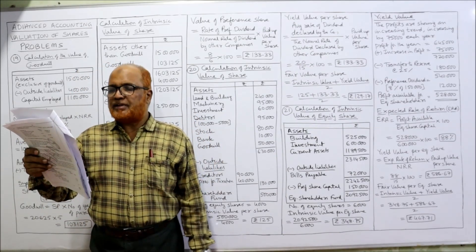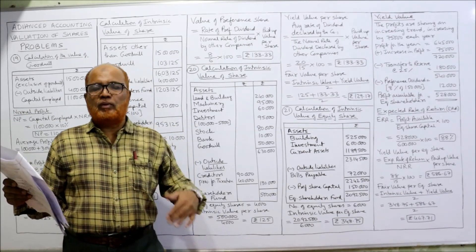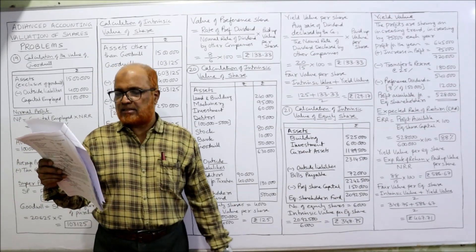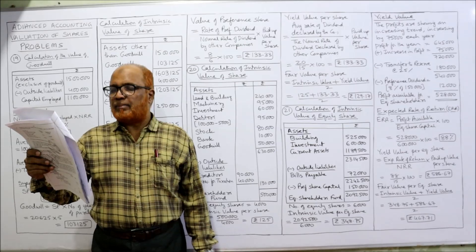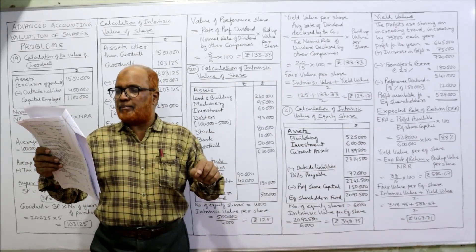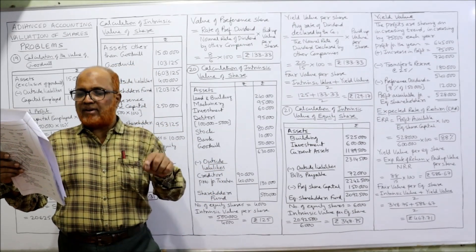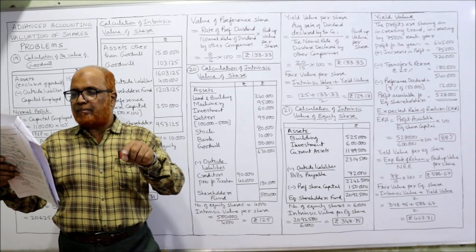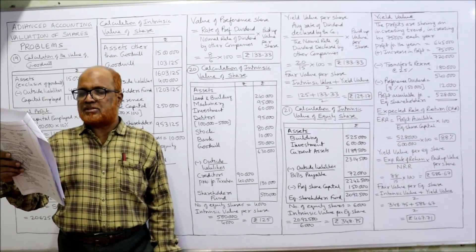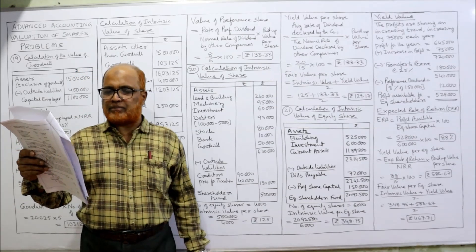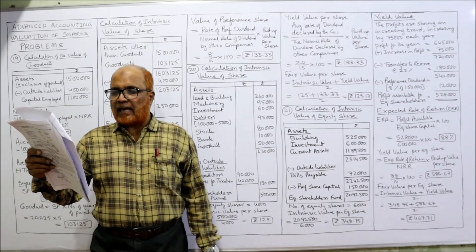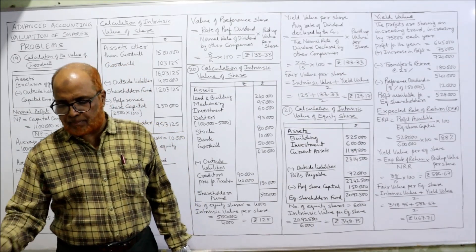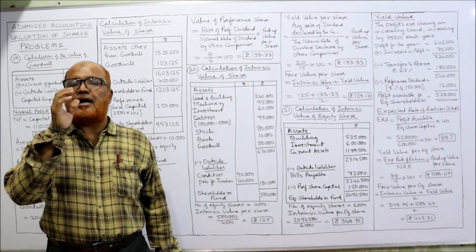Goodwill is given directly as ₹50,000 — no need to calculate it. The normal rate of dividend declared by similar companies is 15%, while the average rate of dividend declared and paid by this company is 20% on its paid-up capital. We are asked to calculate the fair value of the equity share — a new concept here.